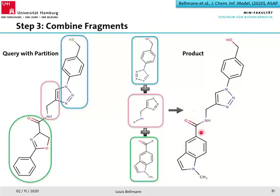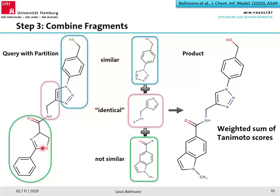We assign a score to the product as a weighted sum of Tanimoto scores from each pool comparison. The fragment from pool A and its connected substructure are very similar — high score; pool B gives a score of 1.0 since they are identical; pool C gives a low score. The weight is determined by the size of the assigned substructure, so a larger substructure gets a larger weight. We repeat this for all partitions.